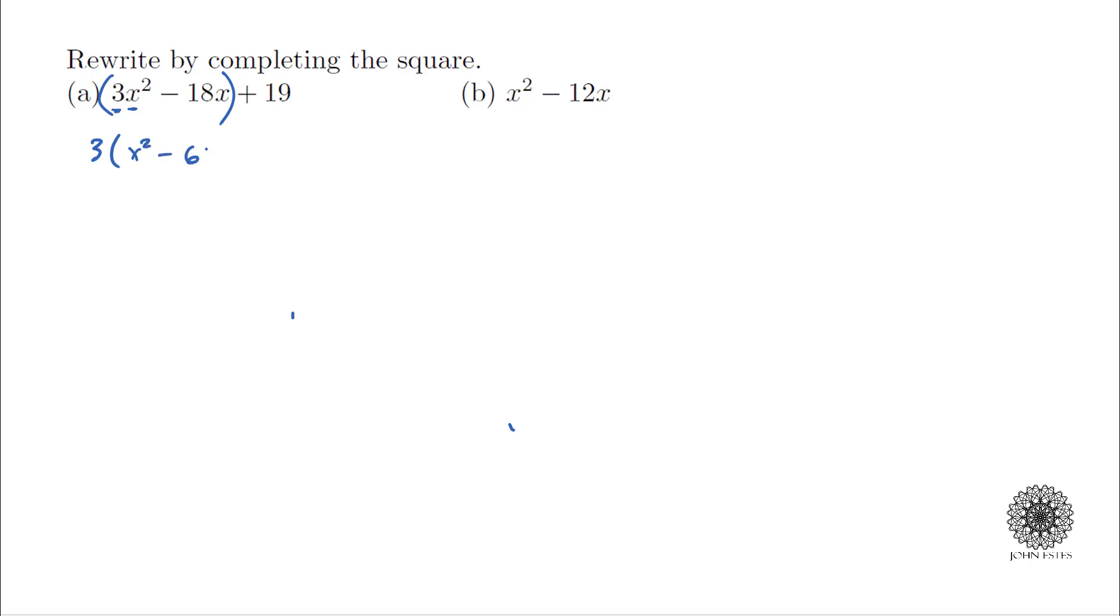From there I can now complete the square. The way completing the square works is you take this middle term, you bring it aside, you divide by 2 so that gives me negative 3, and then I take whatever that was and square it so I get 9. Now I'm going to add that back in so I have x squared minus 6x plus 9.